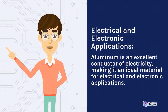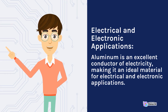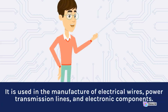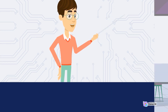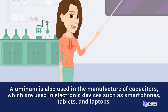Electrical and Electronic Applications: Aluminum is an excellent conductor of electricity, making it an ideal material for electrical and electronic applications. It is used in the manufacture of electrical wires, power transmission lines, and electronic components. Aluminum is also used in the manufacture of capacitors, which are used in electronic devices such as smartphones, tablets, and laptops.